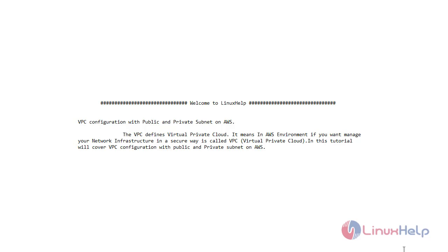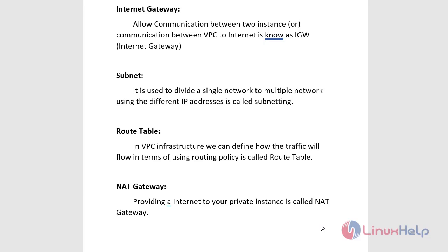Before we go to VPC configuration, first we have to know the basics of VPC. First, we have to know internet gateway — it allows communication between instances or between a VPC and the internet, known as IGW. We also need to know subnets, which divide a single network into multiple networks using different IP addresses. Route table defines how traffic will flow using routing policy. NAT gateway provides internet access to your private instance.